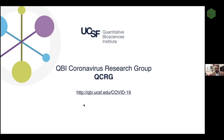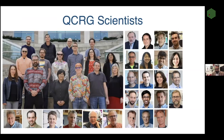This work has been carried out in the context of the QCRG, the QBI Coronavirus Research Group, which is based out of UCSF. It started initially with 22 different labs at UCSF and has since expanded to over 40 labs encompassing hundreds of different scientists, and these groups have come together in a very integrative and unprecedented way.